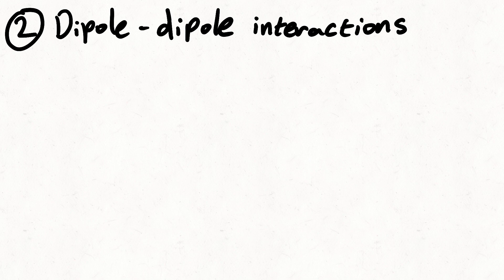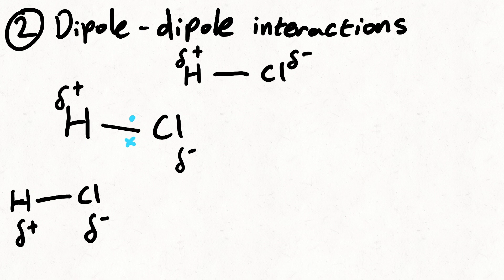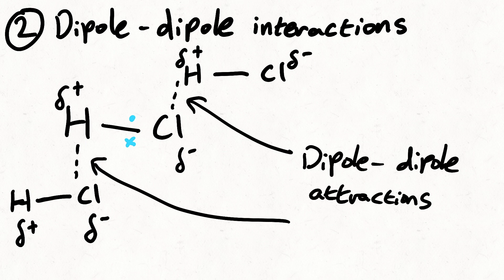Next, we have dipole-dipole interactions. This occurs when molecules have a permanent dipole. Let's take a molecule with a permanent dipole, such as HCl. This dipole is caused by chlorine being more electronegative than hydrogen. The chlorine attracts the shared electrons more strongly than hydrogen. If I take another HCl molecule, there is an attraction between those molecules. This attraction is stronger than van der Waals interactions, since these dipoles are permanent.